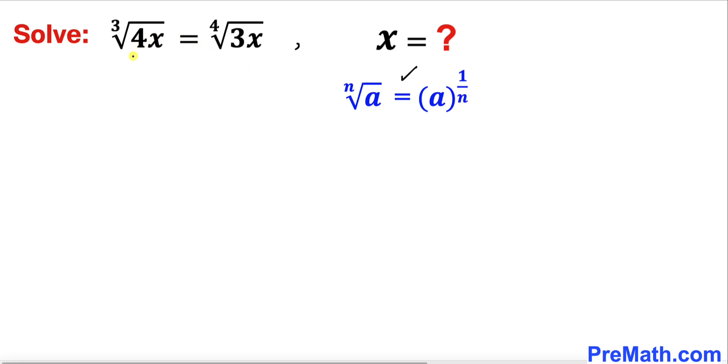So our equation is going to become 4x to the power 1 over 3 equals on the right hand side 3x to the power 1 fourth. Now let's focus on our these indices 3 and 4.